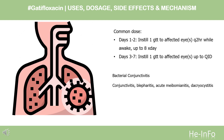Dose — Bacterial conjunctivitis: Indicated for conjunctivitis caused by susceptible strains of Haemophilus influenzae, Staphylococcus aureus, Staphylococcus epidermidis, Streptococcus mitis group, Streptococcus aurelis, and Streptococcus pneumoniae. Zymar 0.3%: Days 1–2, instill 1 drop to affected eyes every 2 hours while awake, up to 8 times per day. Days 3–7, instill 1 drop to affected eyes up to 4 times daily (QID). Zymaxid 0.5%: Day 1, instill 1 drop to affected eyes every 2 hours while awake, up to 8 times per day. Days 2–7, instill 1 drop twice to four times daily.